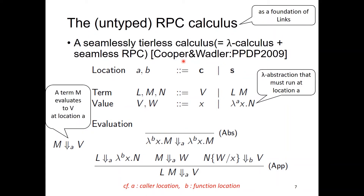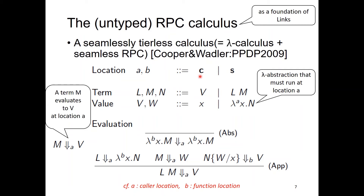The RPC calculus is a seamlessly tierless calculus that extends the Lambda calculus with an RPC feature. It was proposed as a foundation of Lynx by Cooper and Wadler. In the calculus, C is the client location and S denotes the server location. Every Lambda abstraction has a location annotation A, meaning that it must run at the specified location A.